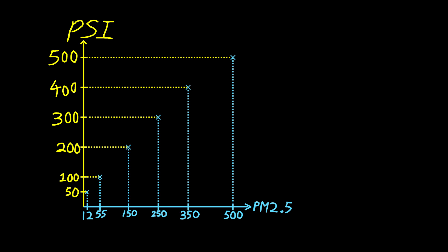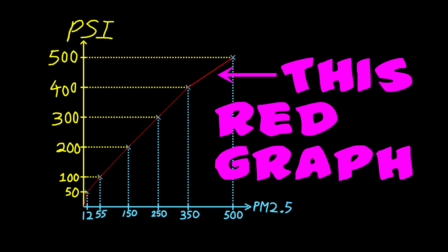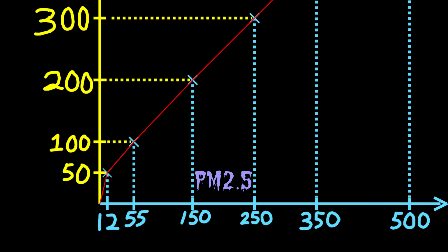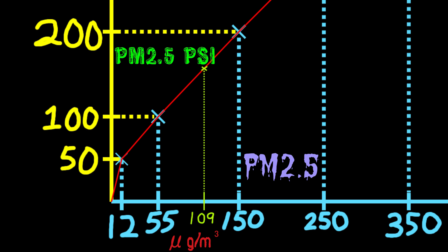Now that we have these 6 points, let's just join up any 2 neighboring points with straight lines. This graph that we get at the end of the day tells us precisely how to convert PM2.5 measurements onto the PSI scale. For example, if the PM2.5 measurement is precisely 109 micrograms per cubic meter, then the PM2.5 PSI is 156.8.